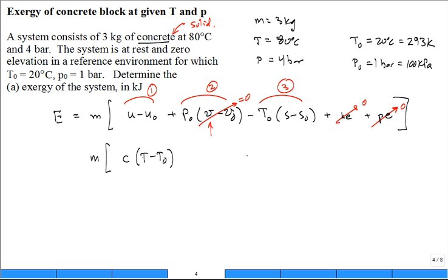And then over here, we have minus T naught. Now I need to calculate the change in entropy. How do I calculate the change in entropy of incompressible substance?